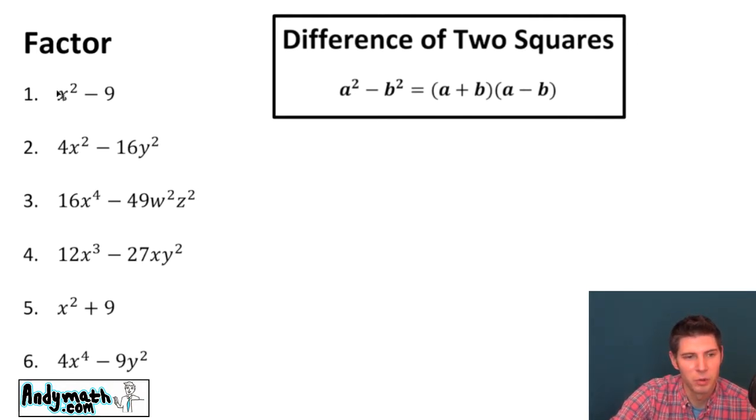So we'll do number one. We'll write out our two parentheses and then the square root of x is x. So we're just going to break that down into x and x. And the square root of nine is three. So we'll do three and three and we just go plus and minus. And now we're done.